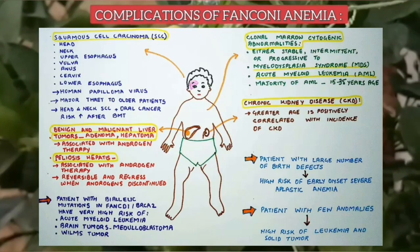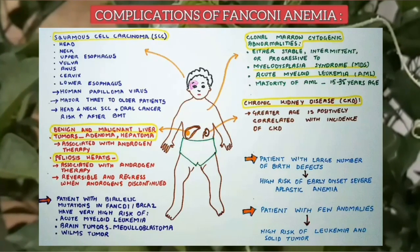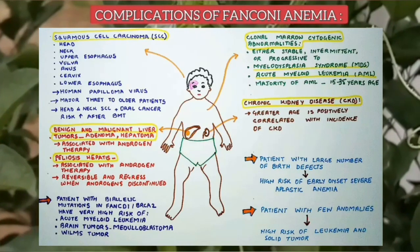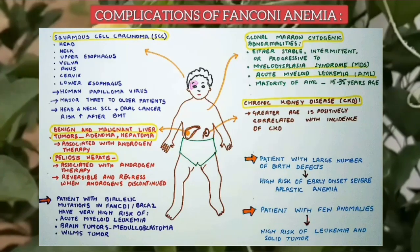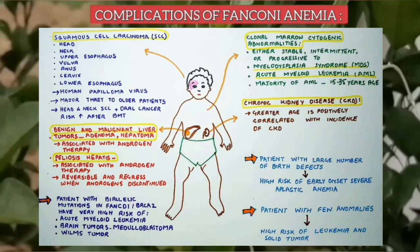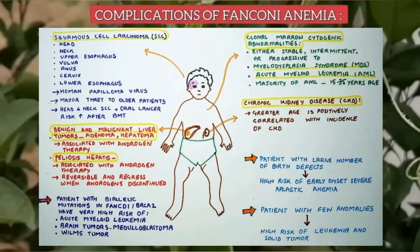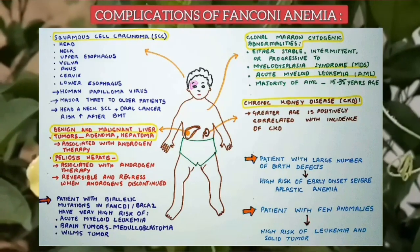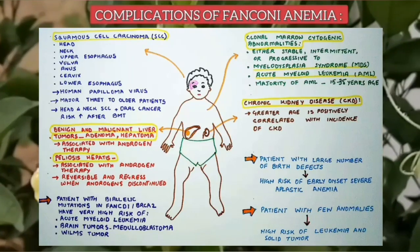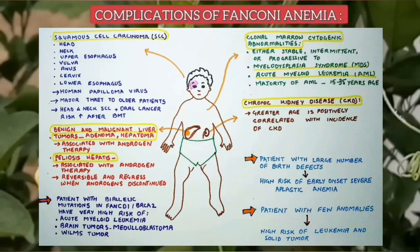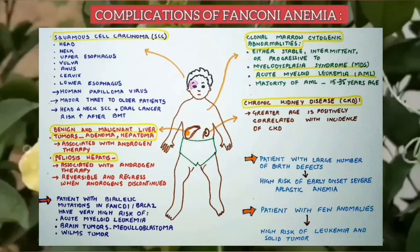Greater age in Fanconi Anemia patients is positively correlated with incidence of chronic kidney disease. Patients with biallelic mutations in the FANCD1 gene have a very severe phenotype including features of vertebral, anal, cardiac, tracheoesophageal and limb associations, and have an extraordinarily high risk of acute myelogenous leukemia, brain tumors especially medulloblastoma, and Wilms tumor. Patients with a large number of birth defects are at high risk of early onset severe aplastic anemia, while patients with few anomalies are more likely to develop leukemia or solid tumors as young adults.